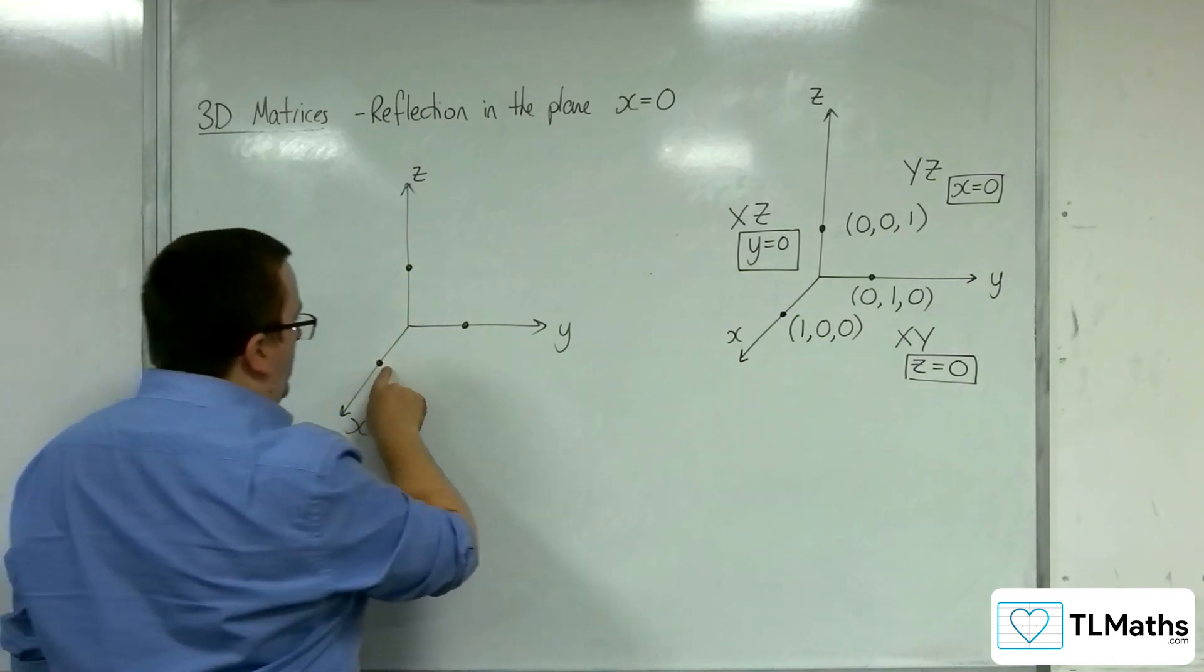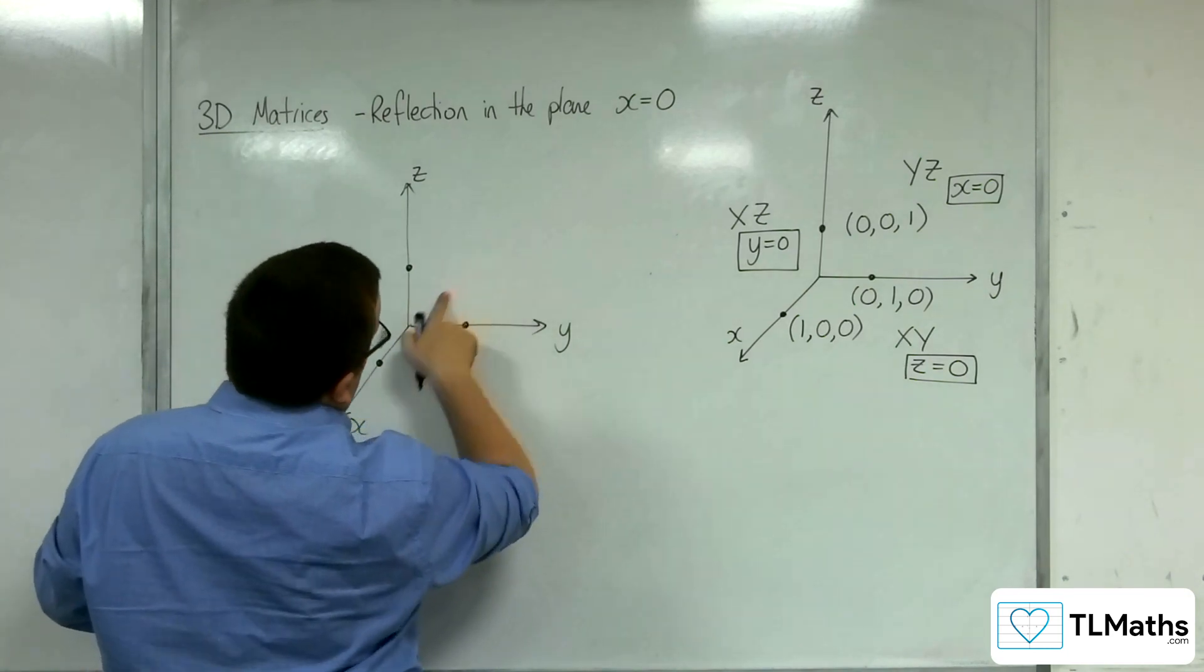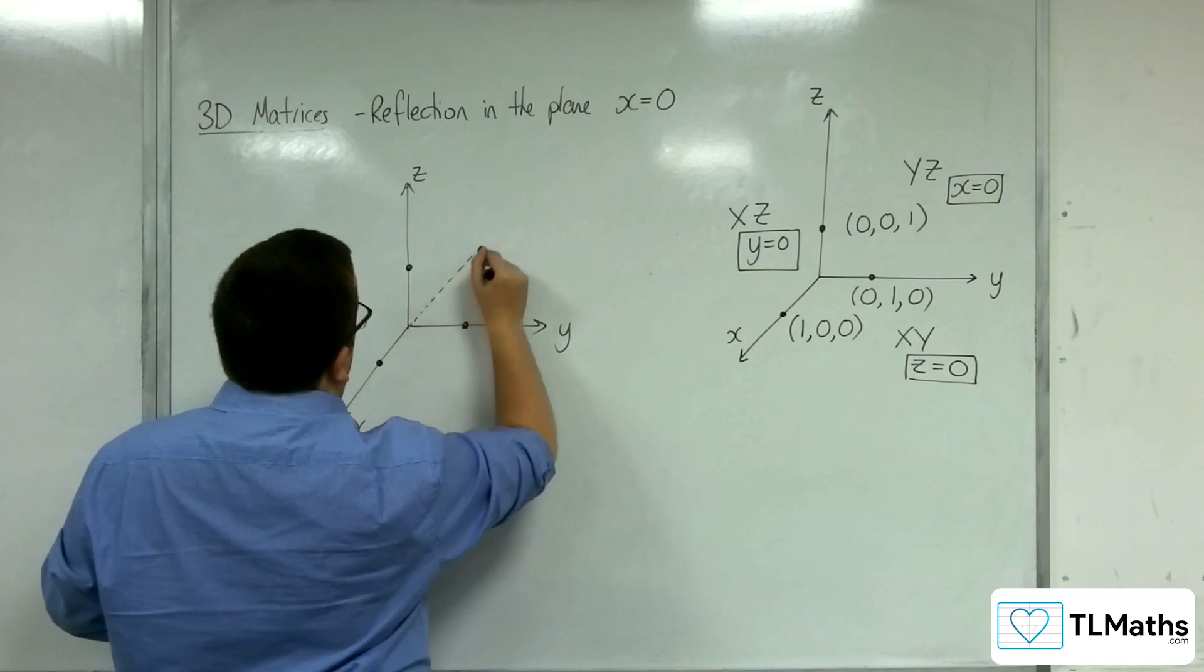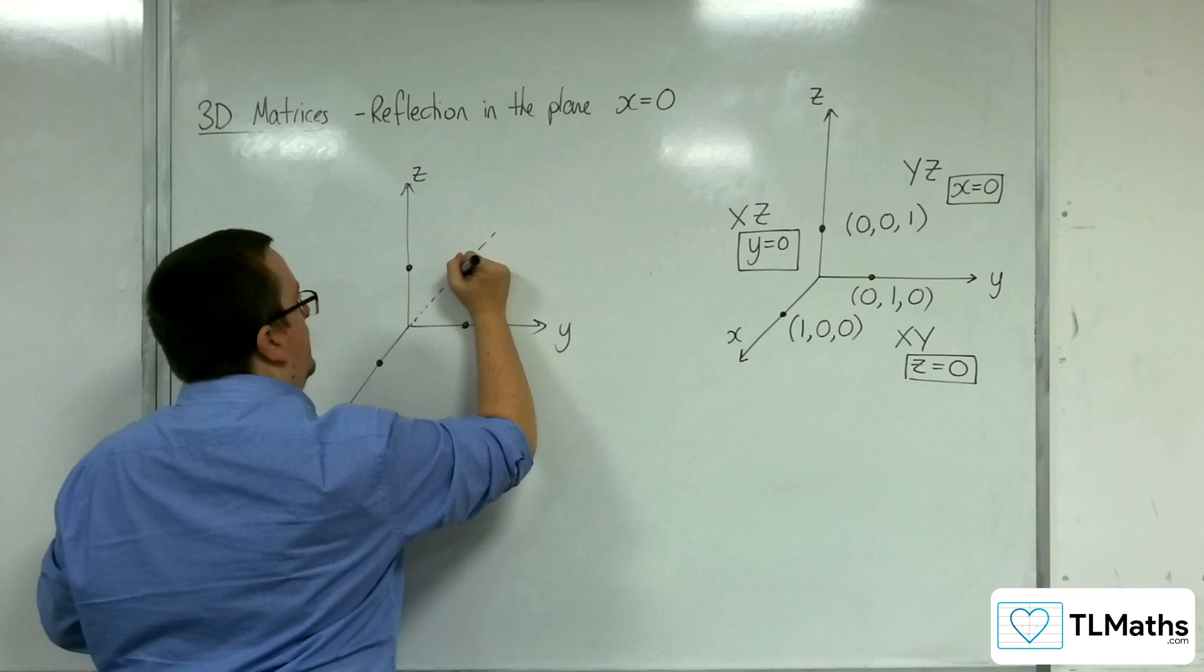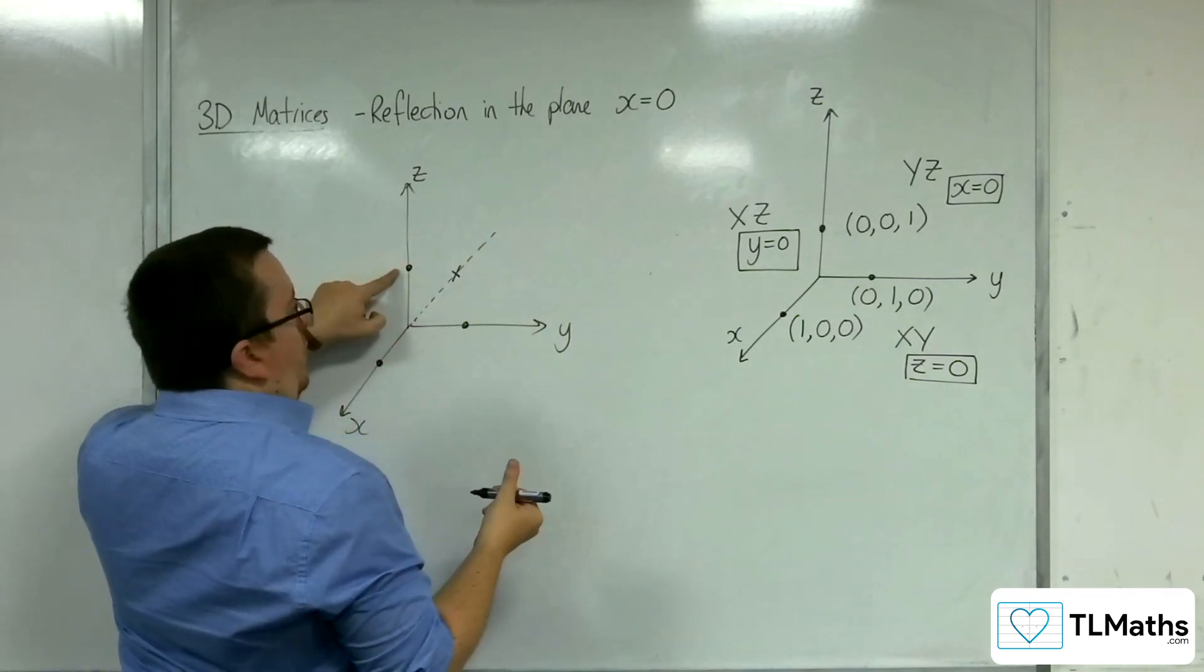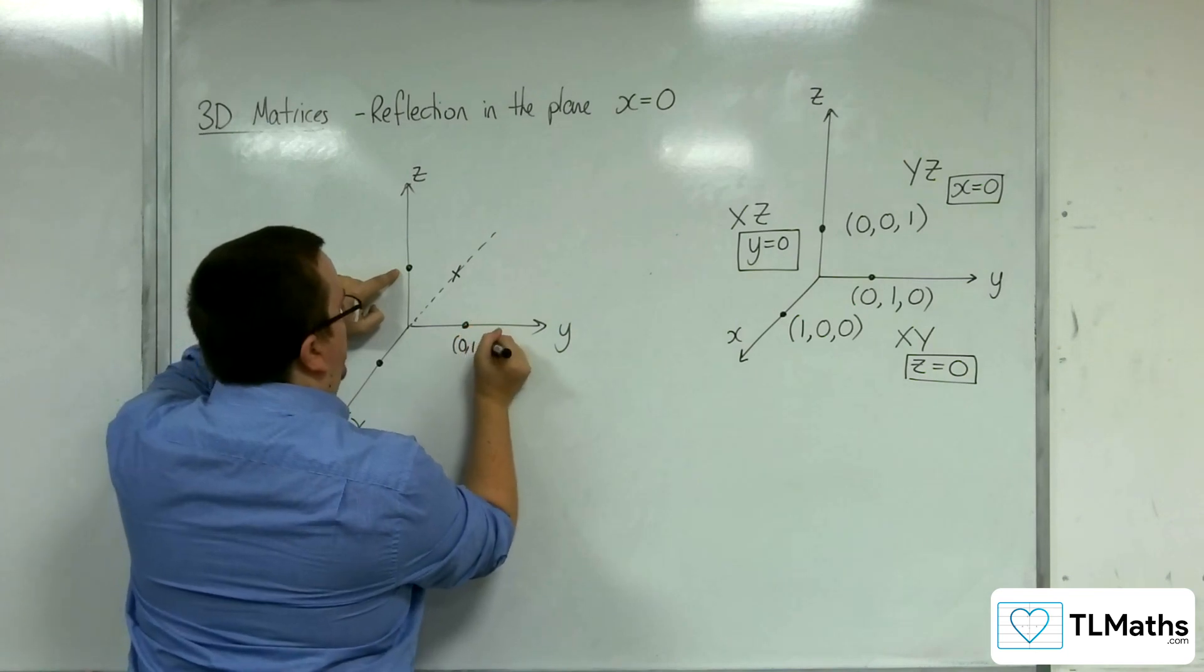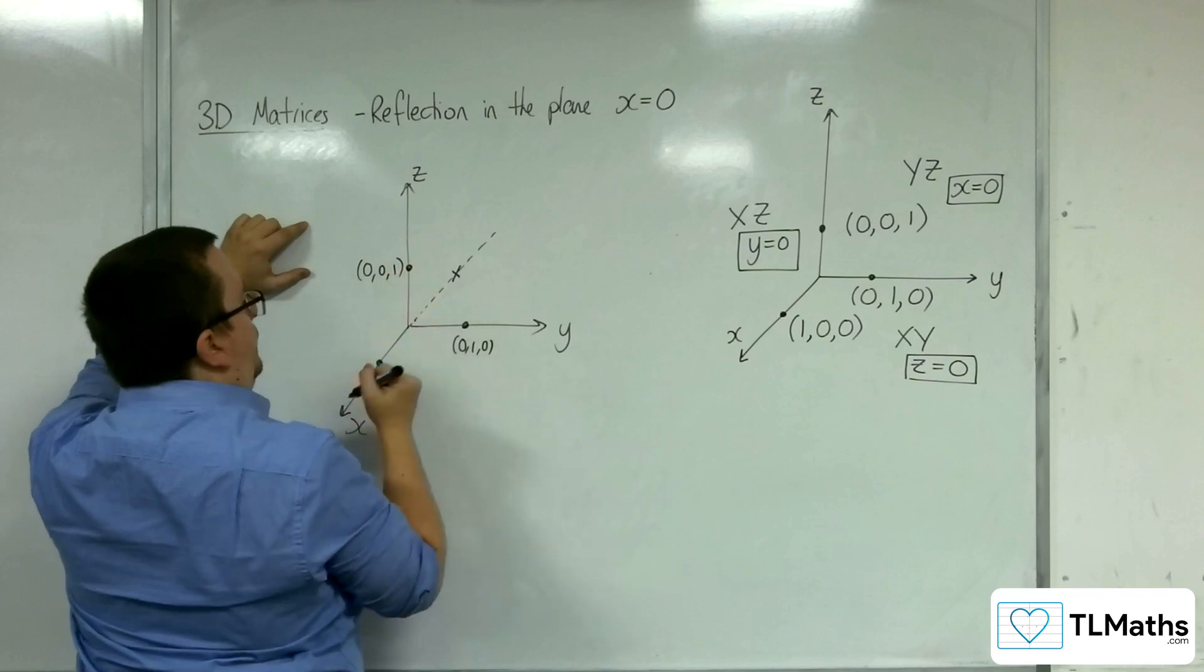It is this point that will map back through. So I haven't drawn that very well. Let's try that. Okay, so this point will be reflected back. So this point remained fixed. So (0,1,0) remains fixed. (0,0,1) remains fixed.